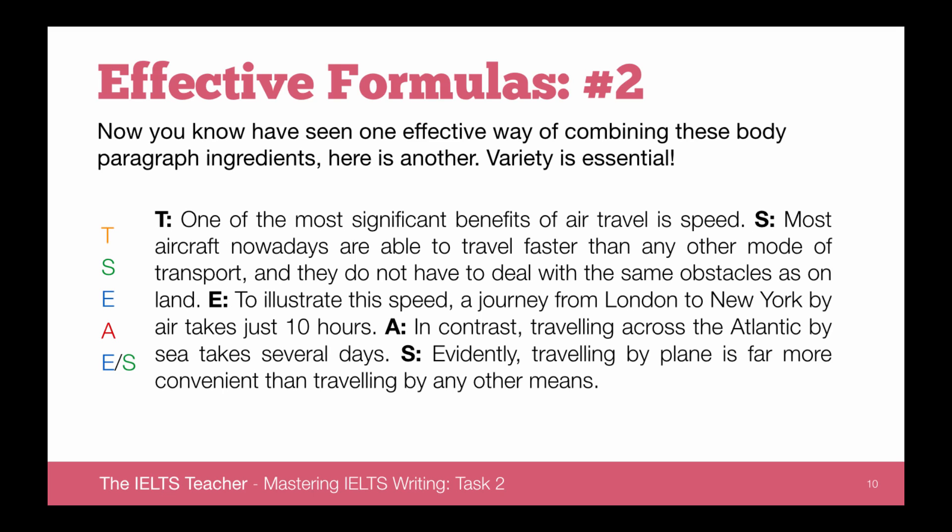We follow that with a clear, tangible, concrete example. Notice the cohesive device: 'To illustrate this speed, a journey from London to New York by air takes just 10 hours.' The alternative is where we look at the opposite or contrast to further support our point — to show how fast air travel is, we contrast it with a slower form of transport: 'In contrast, travelling across the Atlantic by sea takes several days.' We then support that with a result: 'Evidently, travelling by plane is far more convenient than travelling by any other means.'